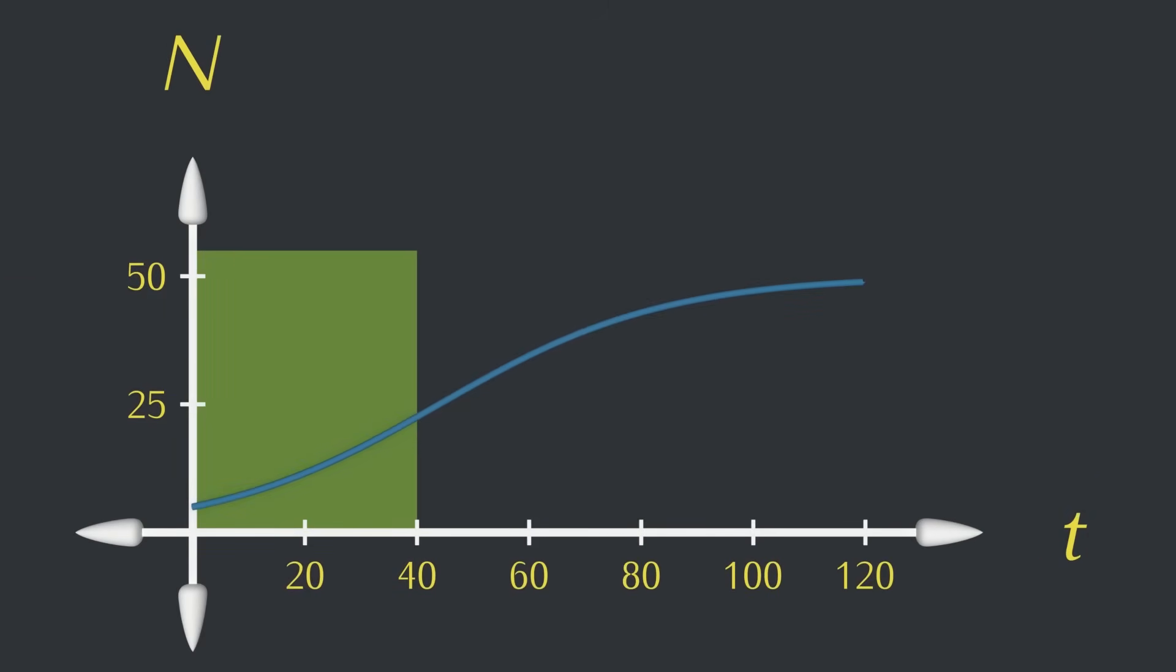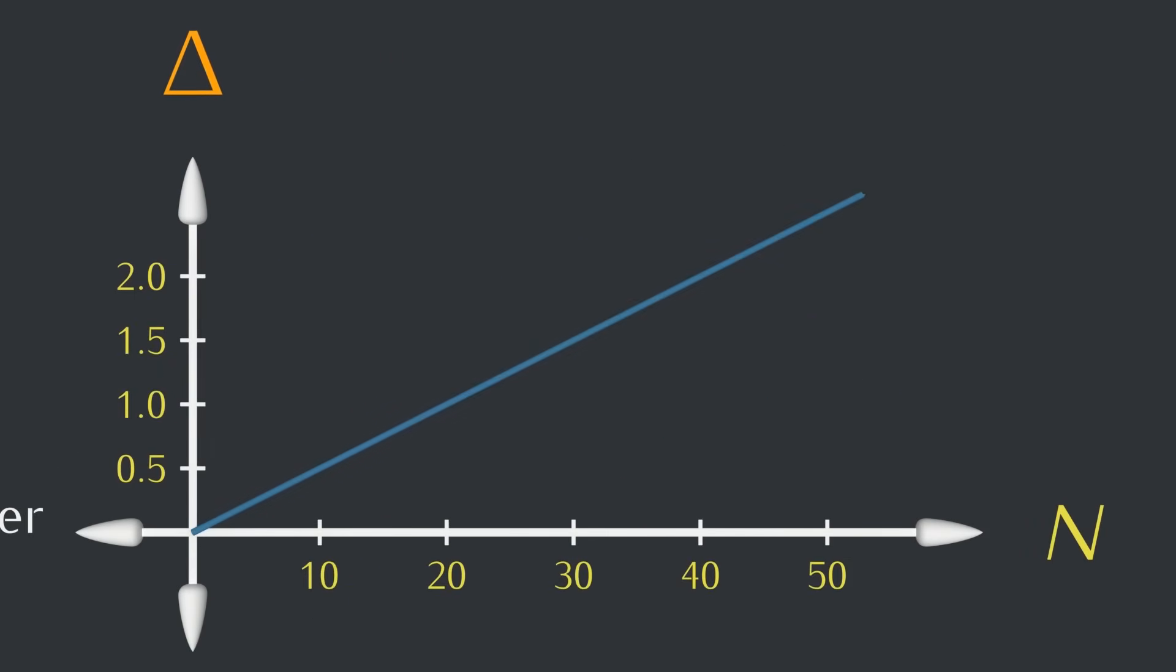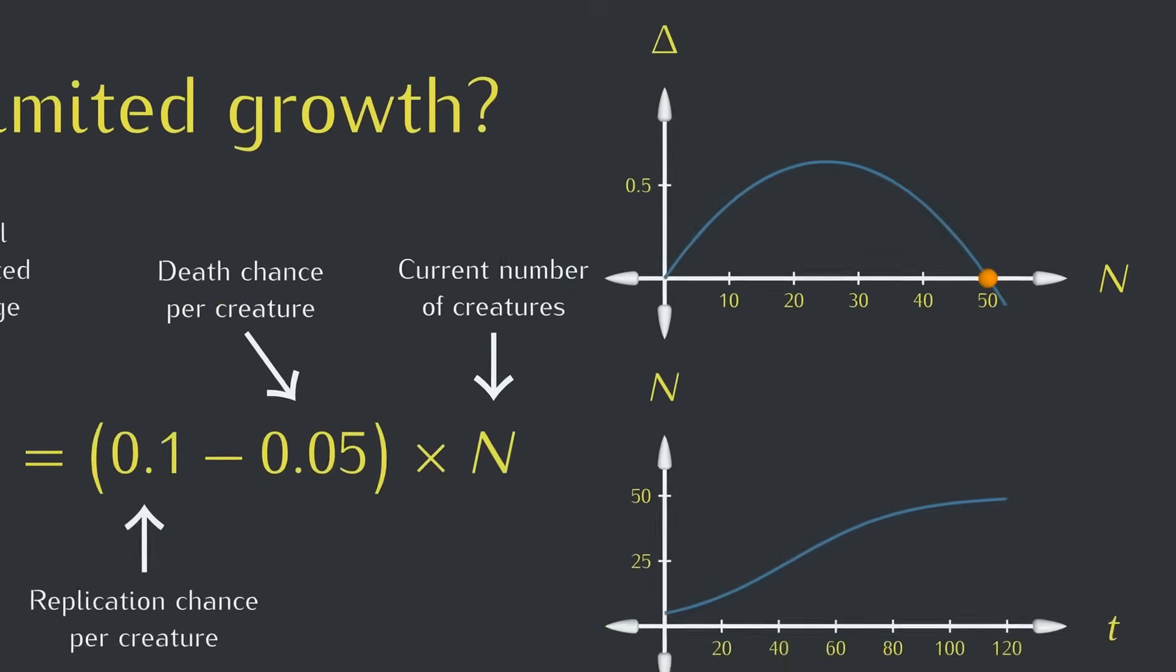We want the population curve to look something like this. It's like an exponential curve toward the beginning, but it levels out at a certain point, at 50 creatures. For the population to level out here, we need the expected change per time step to go to 0 when there are 50 creatures. So this curve is going to need to bend downward. How can we change the equation to make that happen?